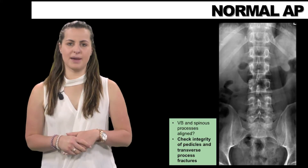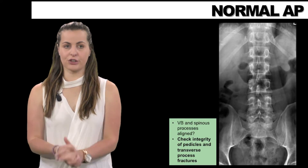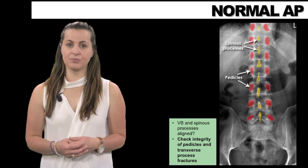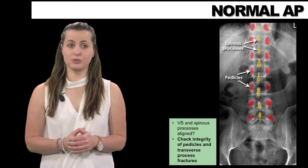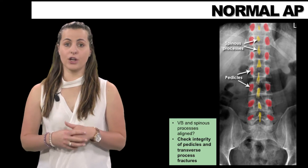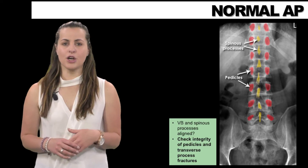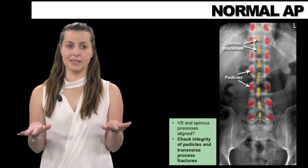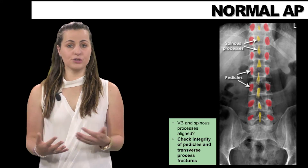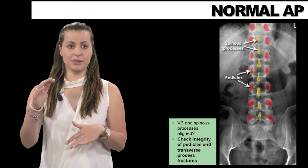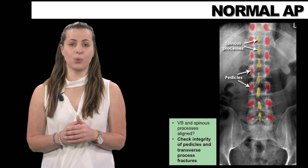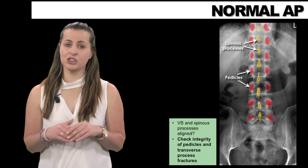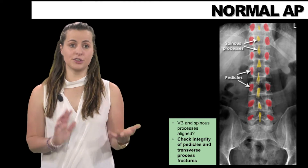Stepping through an L-spine systematic approach using a normal AP radiograph: firstly checking alignment, the vertebral bodies and spinous processes should be perfectly aligned. Assessing the bones, the vertebral bodies and pedicles should be intact by assessing the cortical outline. With respect to spacing, intervertebral disc height will gradually increase from superior to inferior with the exception of L5-S1. The pedicles gradually become wider apart from superior to inferior, though the lower discs are angled away from the viewer. It is important to carefully check pedicle integrity and transverse process fractures.